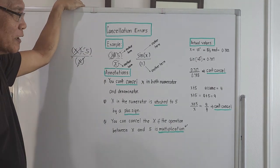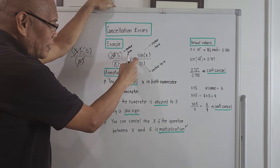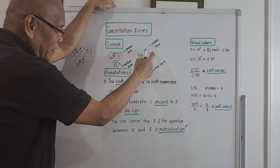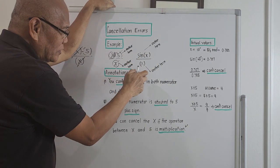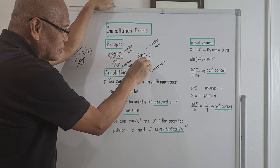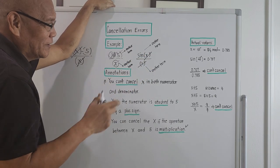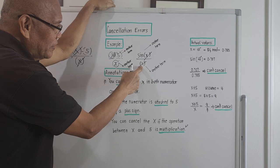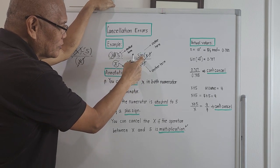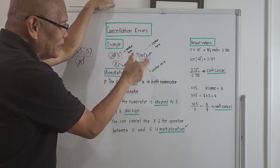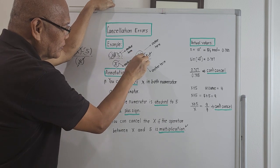That's very clear. Example number two: sine of angle x over x. You cannot cancel x here and x here, because x on the denominator is different from the x inside the sine function. There is a sine function applied to x in the numerator.